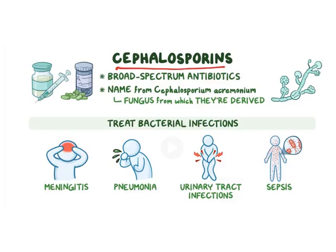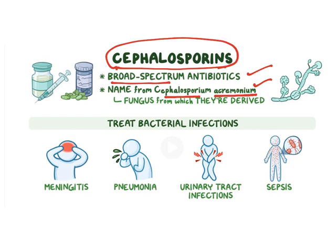Cephalosporins are broad spectrum antibiotics. In case of penicillins, penicillin G is a narrow spectrum antibiotic and ampicillin, amoxicillin are broad spectrum antibiotics, whereas all cephalosporins are broad spectrum antibiotics. Their name is derived from Cephalosporium acremonium, the fungal species from which cephalosporins are isolated.